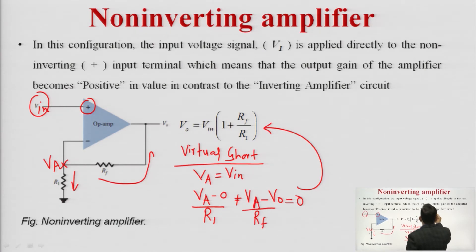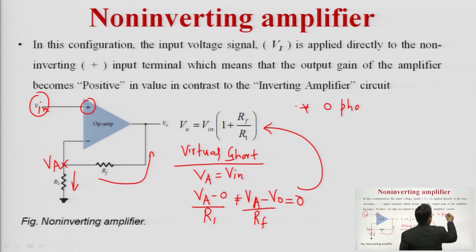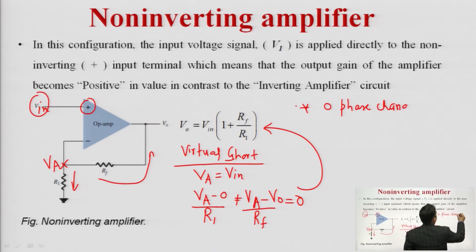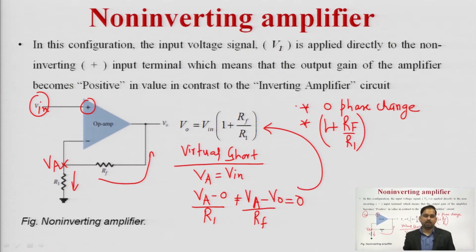The input and output are in the same phase — there is zero phase change. Also, the gain is 1 plus Rf over R1. This configuration is known as the non-inverting amplifier configuration.